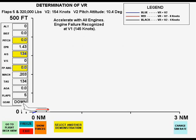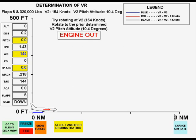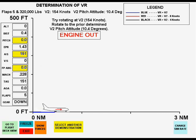The first simulation is a rotation at V-2, which overshoots the V-2 of 154 knots and results in an excessively long ground run.